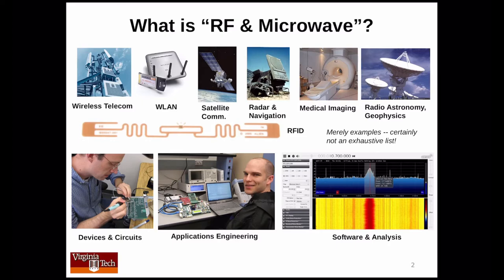An important class of RF and microwave applications that you might not immediately think of is medical imaging. Here I'm showing an MRI machine. MRI stands for magnetic resonance imaging, and an MRI machine is essentially a gigantic magnet combined with a radar. Yet another class of applications is radio science, including radio astronomy and geophysics — things like weather radar and satellites that observe the Earth at radio frequencies in support of climate forecasting.